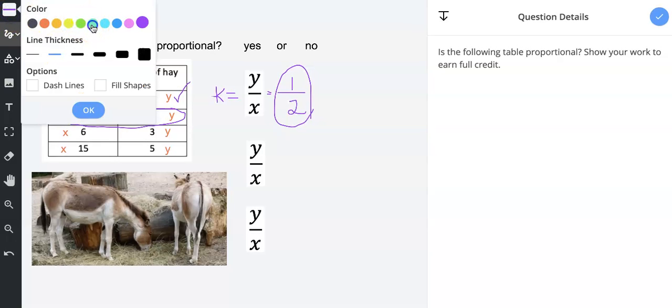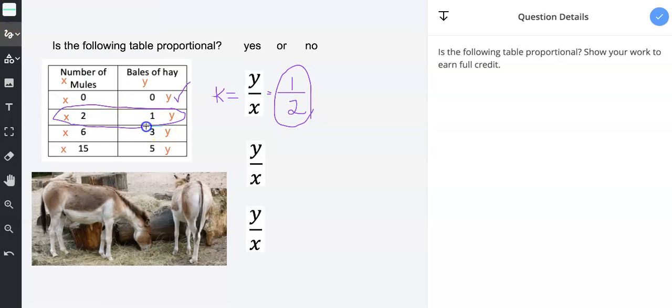And then I'll get a different color. And I'll look at this next point, 6, 3. The 3 is the y value. The 6 is the x value. And you can reduce this.